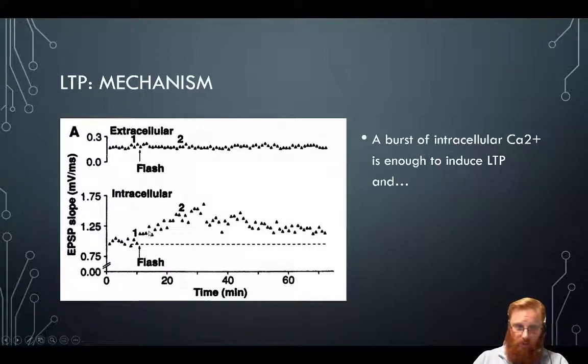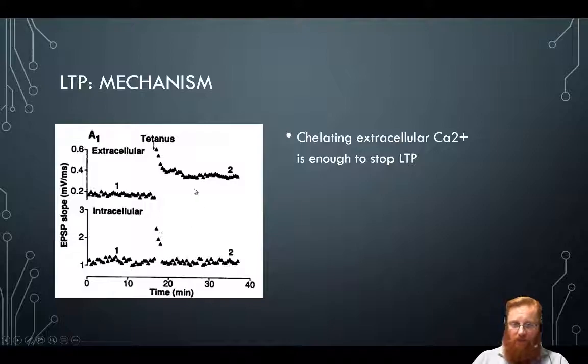So a burst of intracellular calcium is enough to reduce LTP. And if you put a lot of calcium chelator inside a cell, this can basically soak up any of the calcium that gets into the cell.